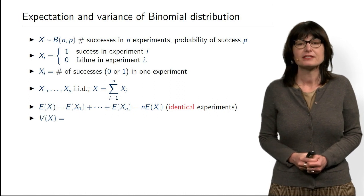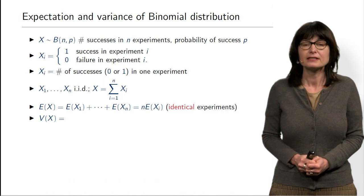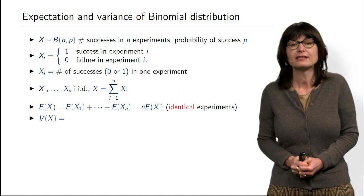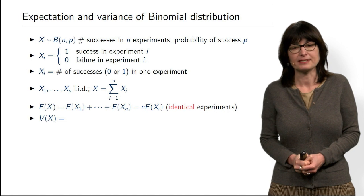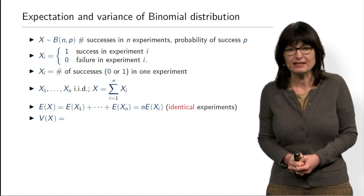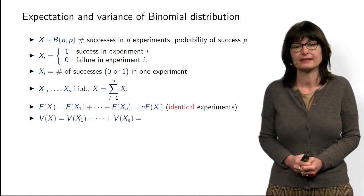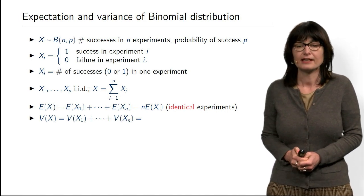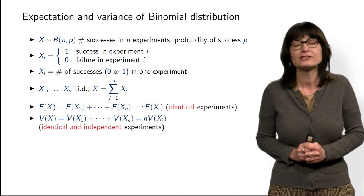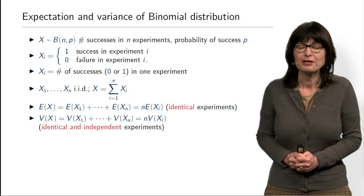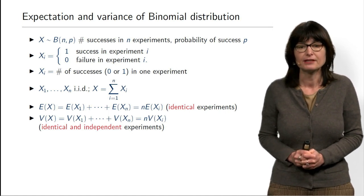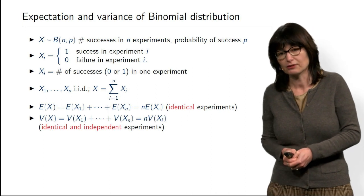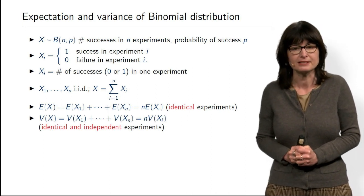What about variance? The variance is not a linear function; however, there is one exception: the variance of a sum of independent random variables is the sum of the variances. So the variance of X is the sum of the variances of each Xi, and again it is N times the same number. This holds not only because our experiments are identical, but also because they are independent. If they were dependent — if there was some correlation — then we would have to include correlation in the formula. But since they are independent, this formula holds.